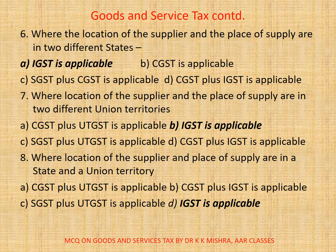Question 7: Where location of the supplier and the place of supply are in two different union territories, options are — A. CGST plus UTGST is applicable, B. IGST is applicable, C. SGST plus UTGST is applicable, D. CGST plus IGST is applicable.